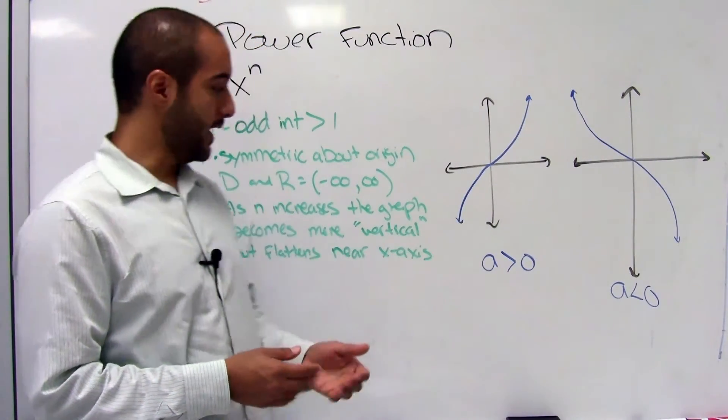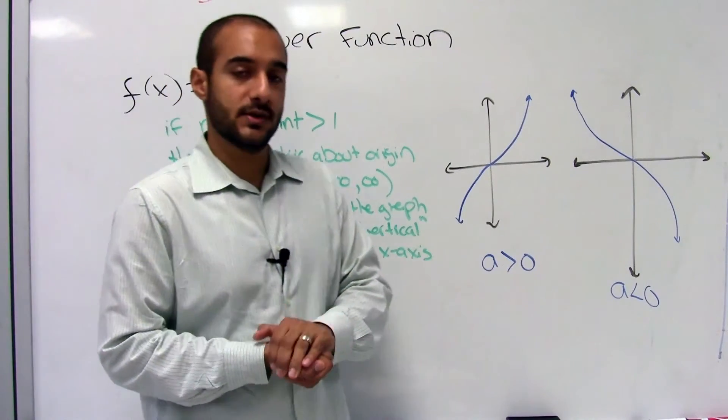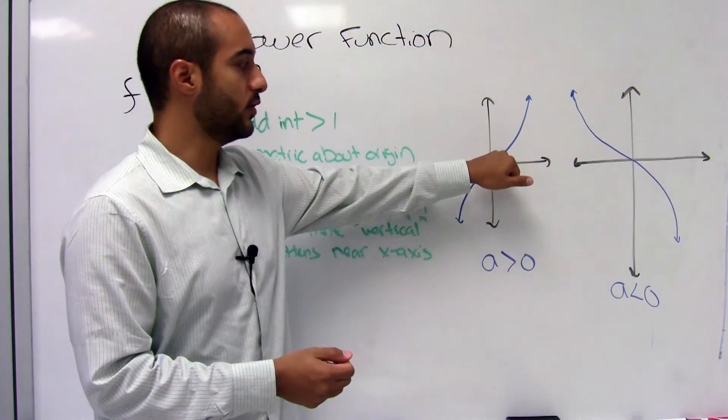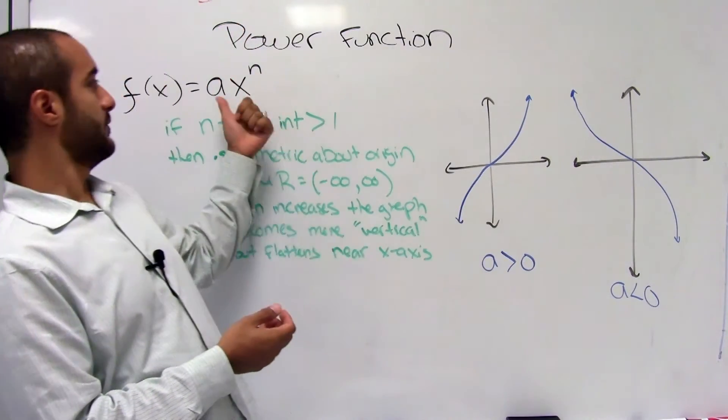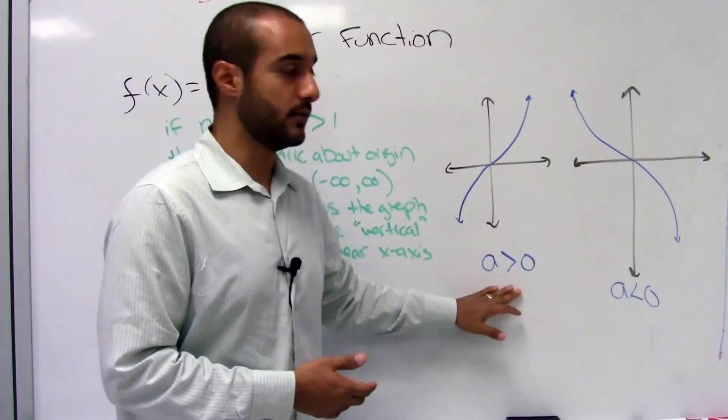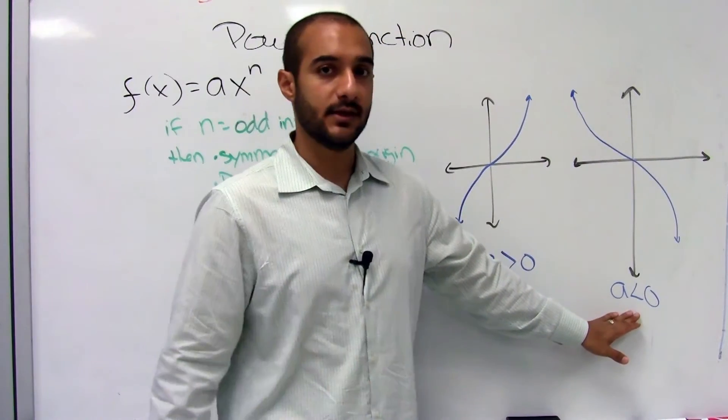Okay, so this is also n. Notice that it'll flatten out just like your even numbers did when it's close to the x-axis. So this is what it looks like when a, okay, remember your coefficient is greater than 0, and when your a is less than 0.